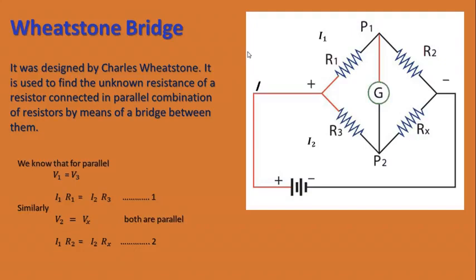Now we know that for a parallel circuit, voltage is always the same. From the diagram, R1 and R3 are parallel to each other, so V1 equals V3. Therefore, V1 equals I1·R1 because I1 flows through R1, and similarly I2 flows through R3. So we get I1·R1 = I2·R3. This is equation number 1.